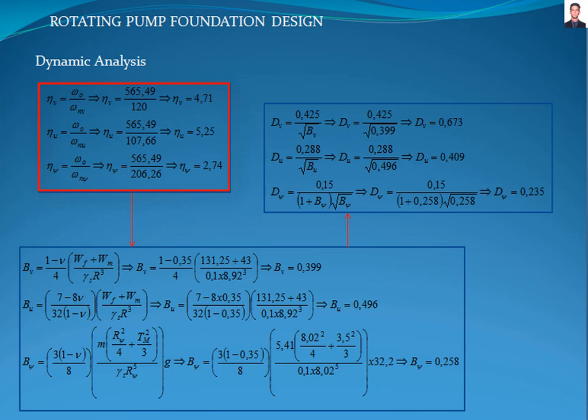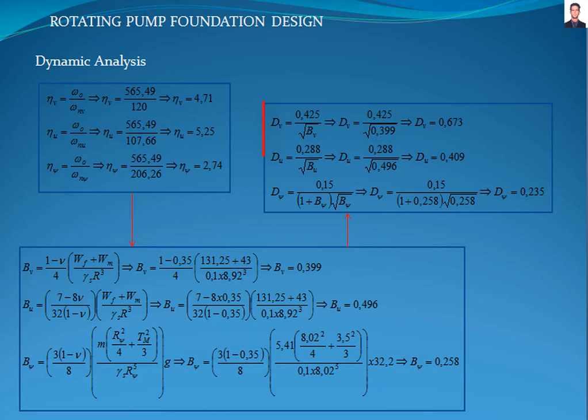The next step is to calculate the mass ratio with these equations, where BV, BU, and B-psi are the vertical, horizontal and rocking mass ratios, and gamma-S is the specific weight of the soil obtained from the soil analysis report, giving results of 0.399, 0.496, and 0.258 respectively. Now we proceed to calculate the damping ratio with these equations, where DV, DU, and D-psi are the vertical, horizontal and rocking damping ratios, giving results of 0.673, 0.409, and 0.235 respectively.